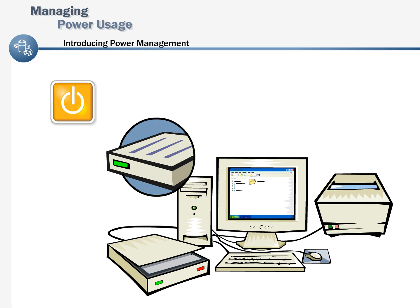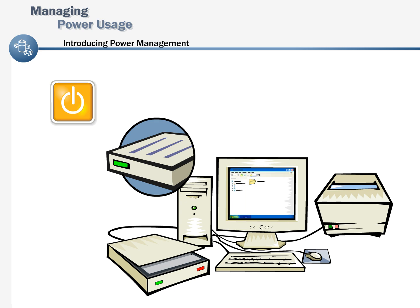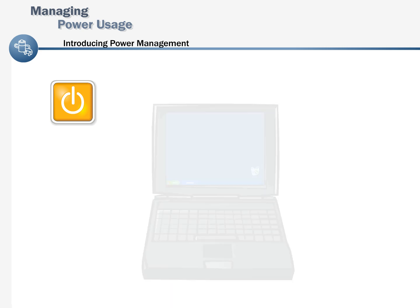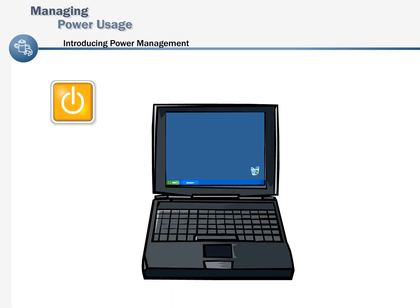On standby, a computer switches to low power mode and turns off the monitor and hard disks. When you press a key or move the mouse, the computer comes out of standby quickly, and the desktop is restored exactly as you left it. Standby is especially useful for conserving battery power in portable computers.